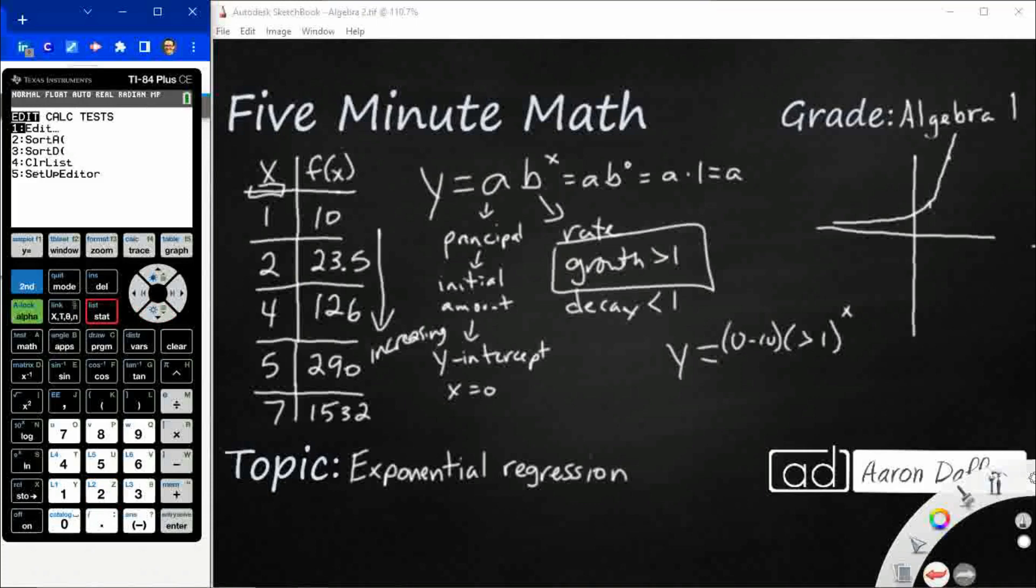We're going to hit stat. Now we're going to go over to hit the right. So we're going to take that top tab and move it over to calc. Go all the way down to 0. We've got exponential regression. Exponential regression is going to take your x's as your list 1, which we've already done, your y's as your list 2, which we've already done. You're just going to scroll down to calculate.